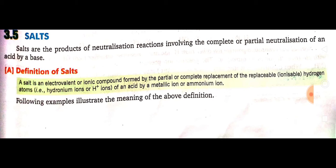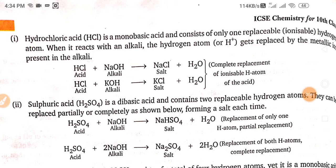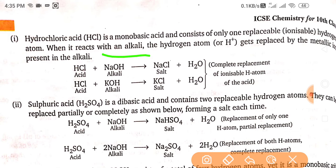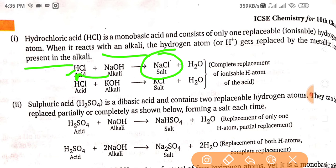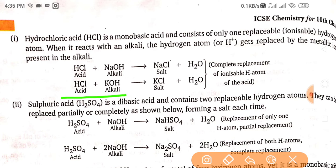The following examples illustrate the meaning of the above definition. Hydrochloric acid is a monobasic acid and consists of only one replaceable or ionizable hydrogen atom. When it reacts with an alkali, the hydrogen atom or H⁺ ion gets replaced by the metallic ion present in the alkali. So when HCl reacts with sodium hydroxide, it forms sodium chloride. Potassium hydroxide also reacts with the acid and forms potassium chloride.